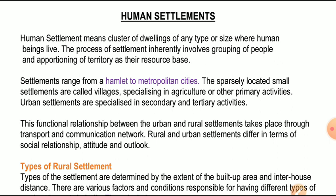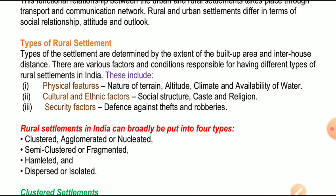गाँव और शहरों की बस्तियों के बीच जो संबंध बनाया जाता है, वो transport और communication network के द्वारा बनाया जाता है। मतलब गाँव से शहरों में गाड़ियां आती-जाती हैं, या इसी तरह से mobile, internet, radio, newspapers, television के जरिए शहर और गाँव में अंतर-संबंध स्थापित किया जाता है। यह ग्रामीण और शहरी बस्तियां सामाजिक संबंधों, दृष्टिकोण और रहन-सहन व जीवन जीने के तरीके में अंतर उत्पन्न करती हैं।